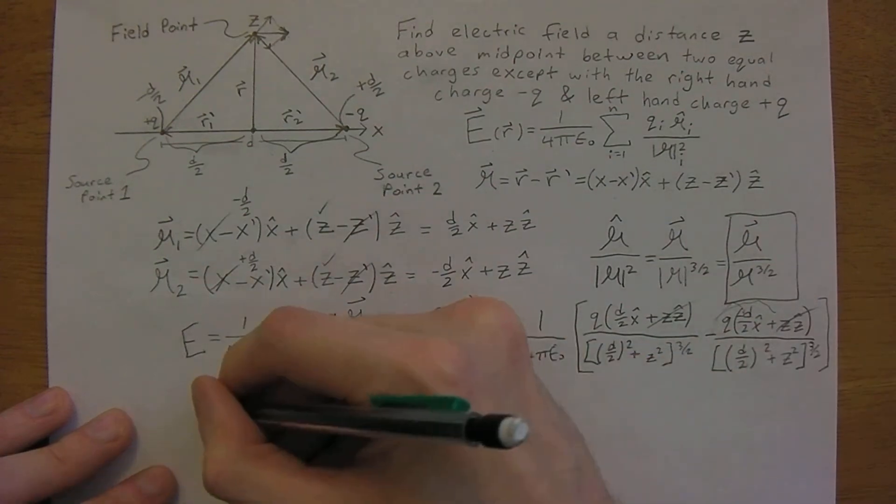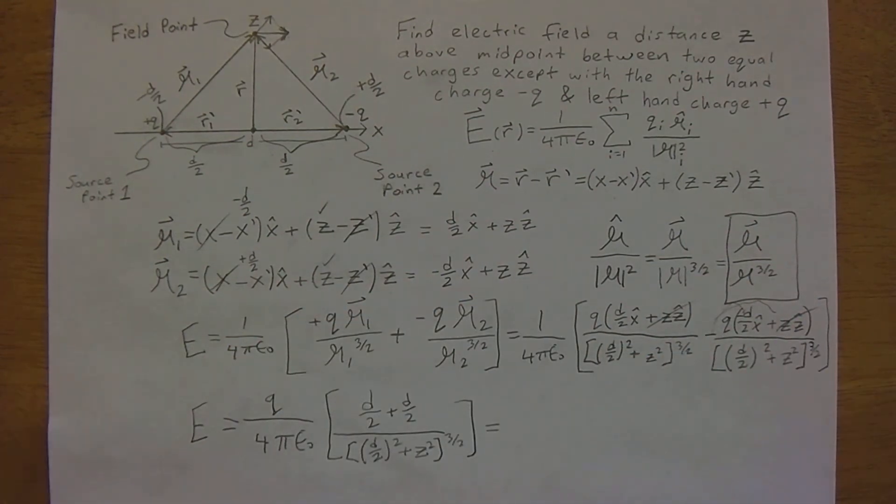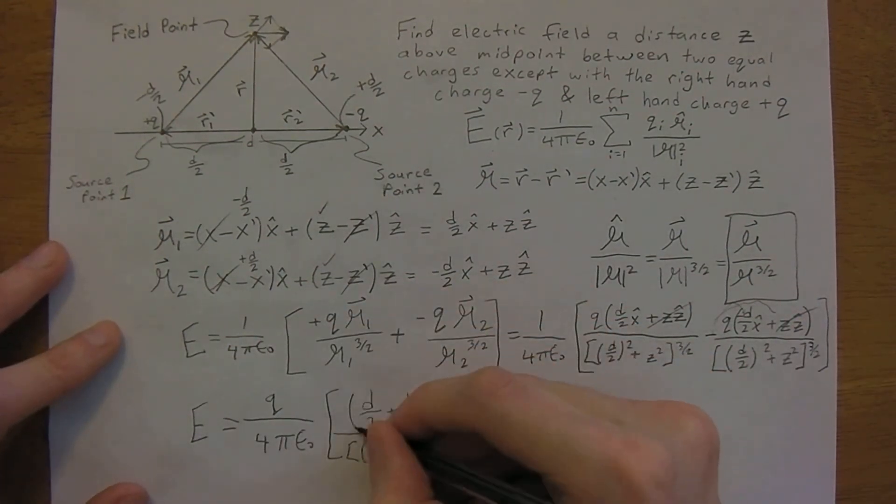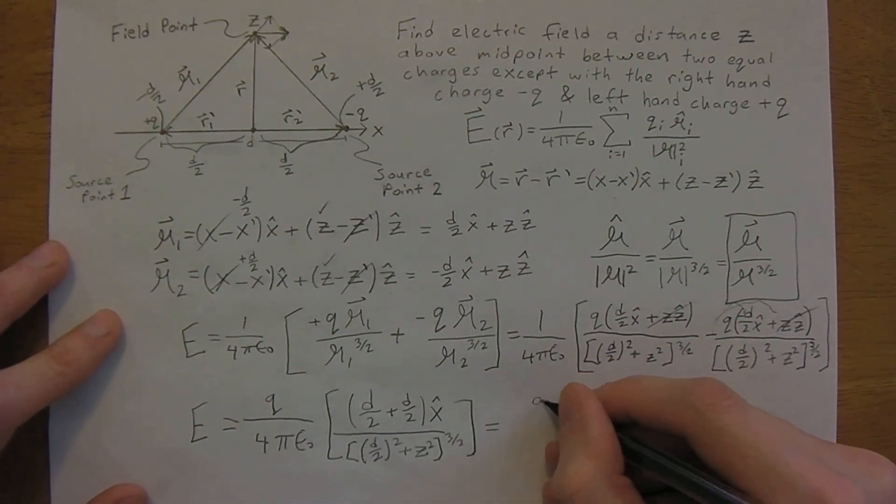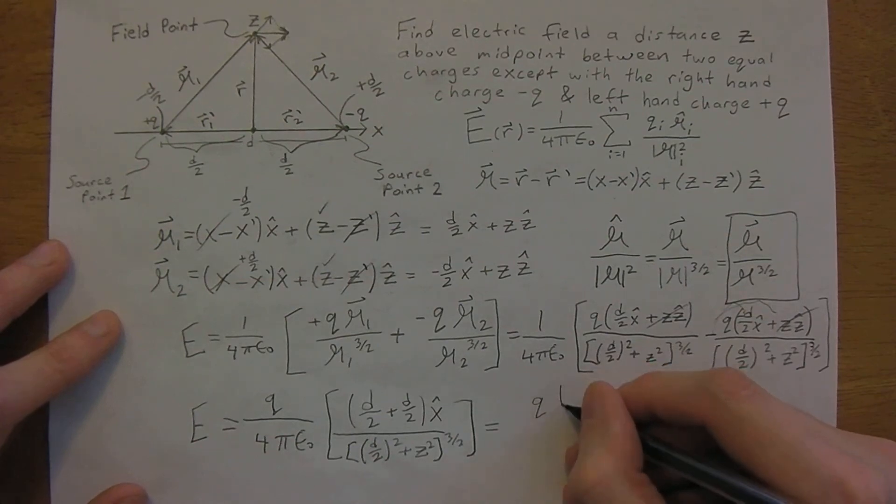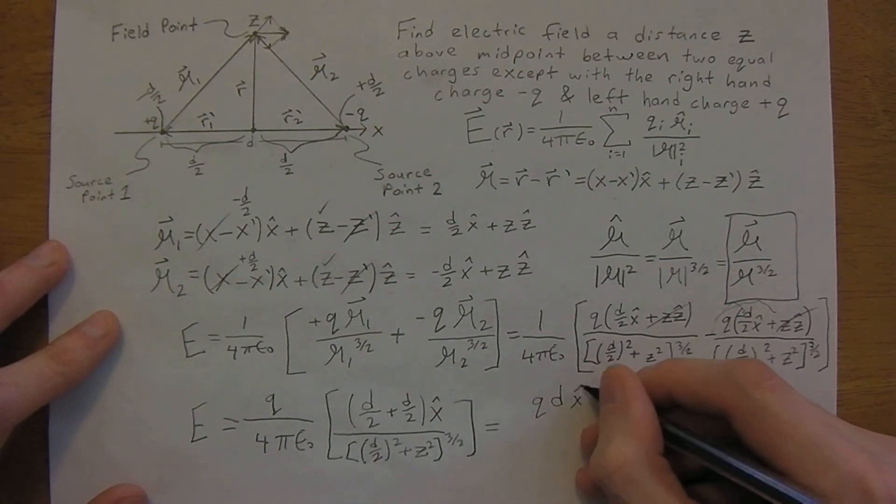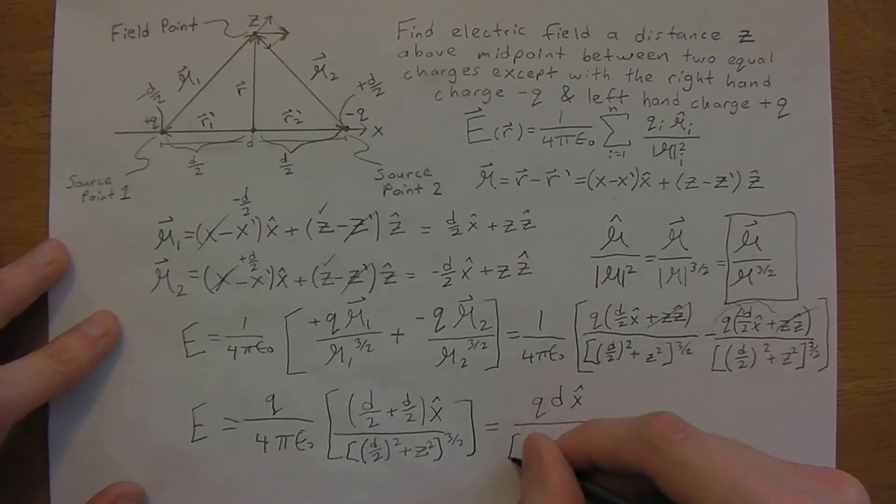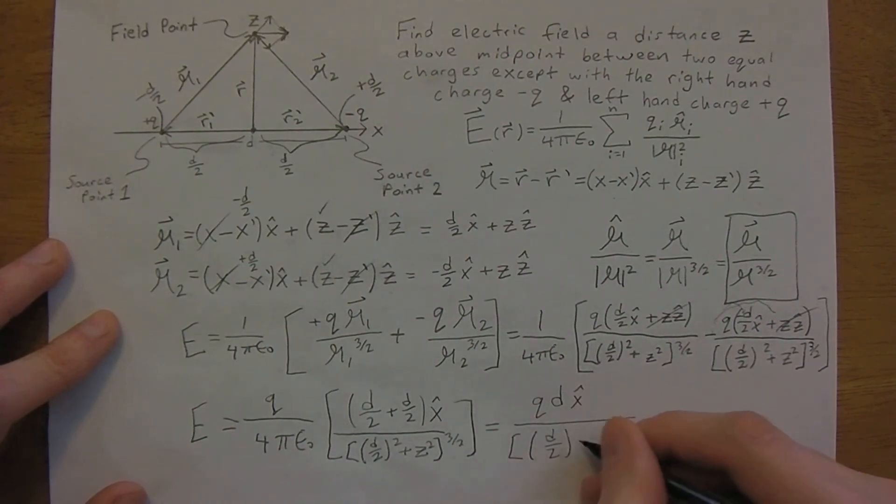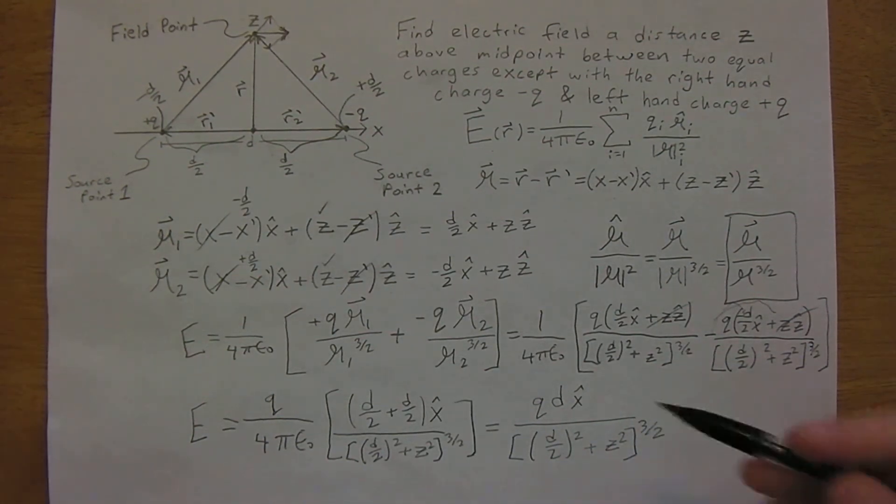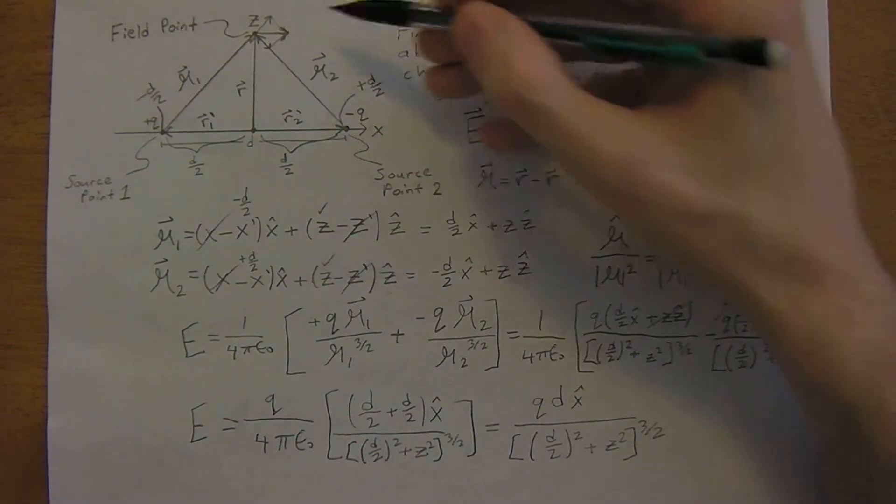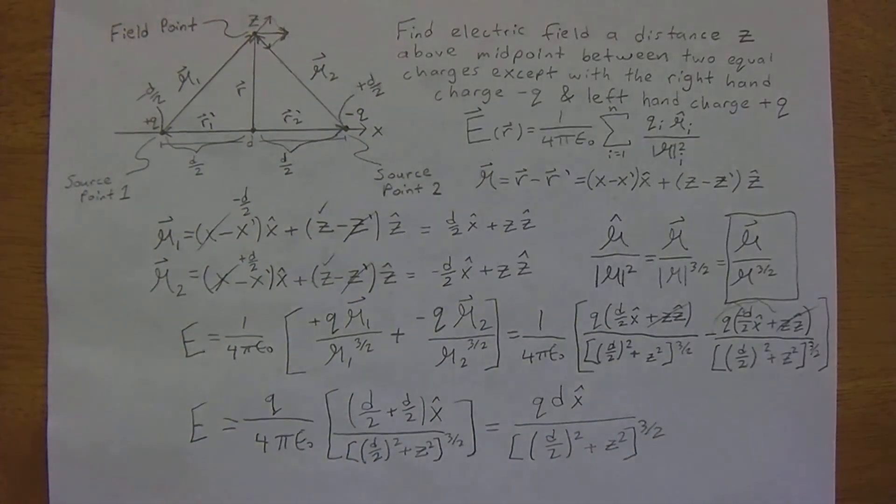So finally, we are left with, and I've got to put in the x hat because that's still there, so our final answer is q times d x hat divided by d over 2 squared plus z squared to the 3 halves power. Okay, and that makes sense because we're only in the positive x hat direction, and we figured that out earlier. Perfect.